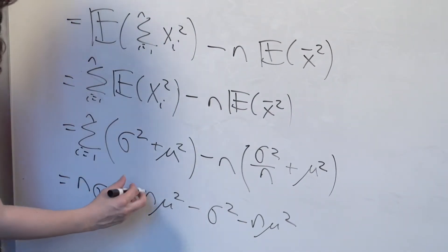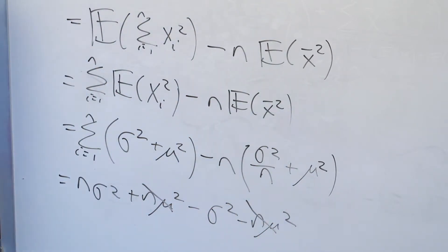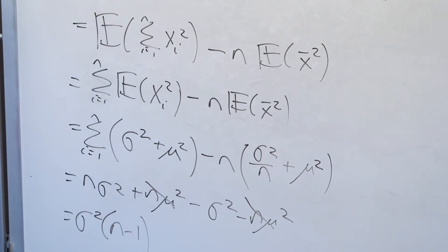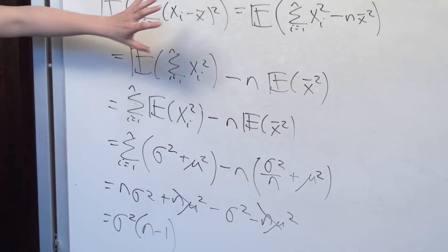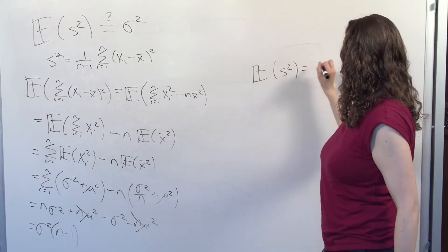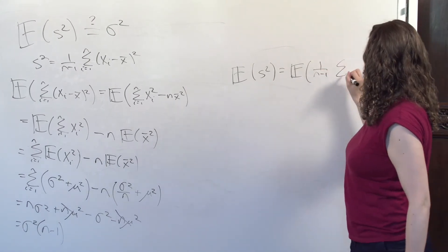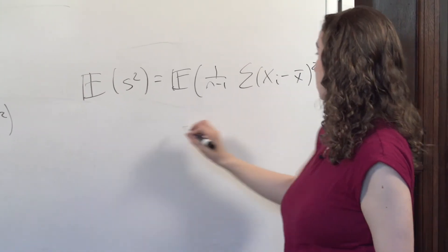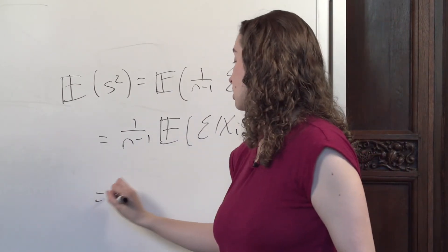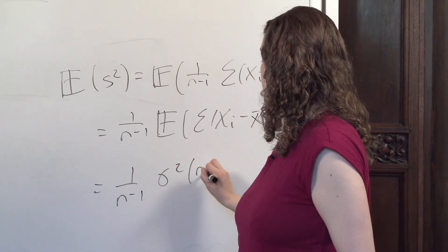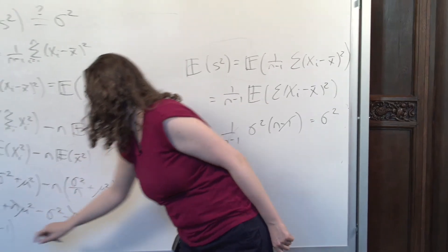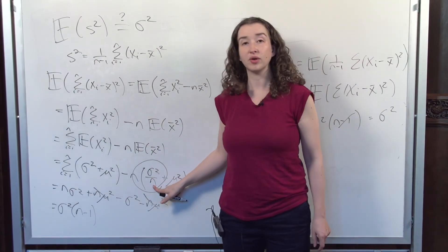We should have some cancellation going on here — the mu squared terms and one sigma squared cancel — leaving us with sigma squared times (n minus 1). In other words, if I take the expected value of this summation, I get sigma squared times (n minus 1). Therefore, the expected value of s squared equals 1 over (n minus 1) times sigma squared times (n minus 1), which equals sigma squared. So s squared is unbiased for sigma squared, and the key place where this minus 1 came from is right there.